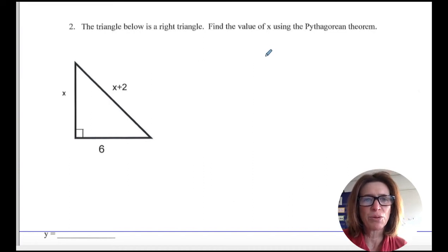Hi everyone, so today I'm going to be going over test question number two from the Chapter 8, Part 1 test. It said the triangle below is a right triangle. Find the value of x using the Pythagorean Theorem.